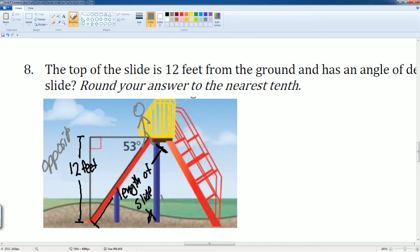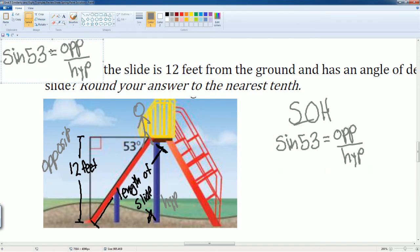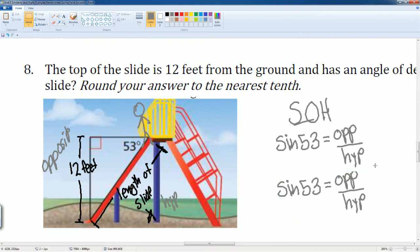...here is going to be your hypotenuse. So you have opposite and hypotenuse, which is going to be SOH sine. So sine of 53 degrees is going to be equal to your opposite divided by your hypotenuse. Now I can make the substitution in. My opposite here is...